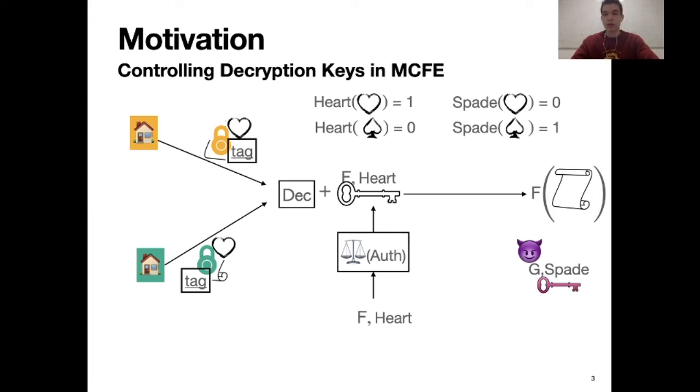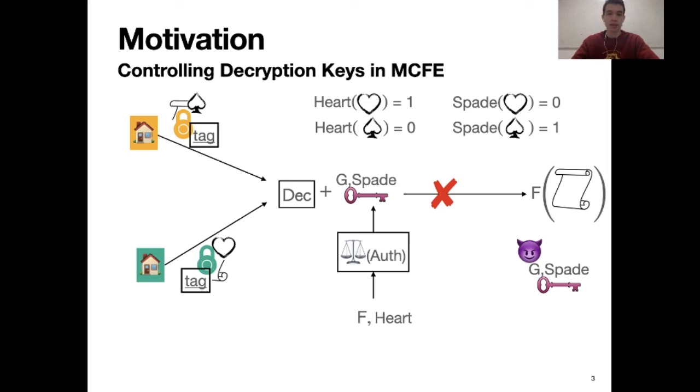However, concerning the malicious decryptor, as soon as he tries to decrypt the newly encrypted client's ciphertext, because there exist the attributes that will not satisfy the embedded policy of this adversary key, the decryption will not succeed and thus the adversary cannot obtain the functional evaluation anymore. Therefore, in some sense, we have revoked the malicious decryptor.